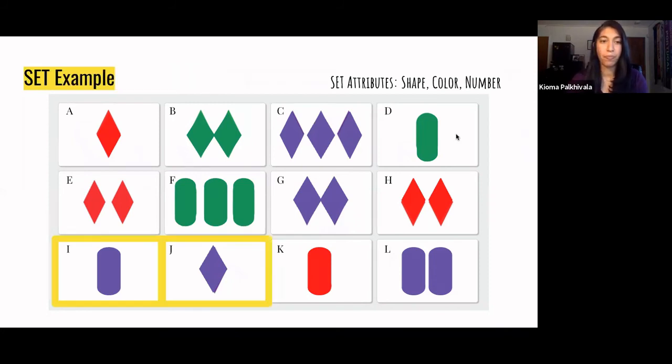As an example, let's take a look at card I and card J in the last row to see if they're a set. Right here, I can see that we have a different shape. So that is not a characteristic in the set, but they have the same color. They're both purple. And each card only has one shape in the card. So they share the same number. Since they have those two common characteristics, they make a set. Now what I'd love for you to do is see if you can find sets. Write in the chat the letters for each card, and let me know what sets you see. I'll give everyone a few minutes.